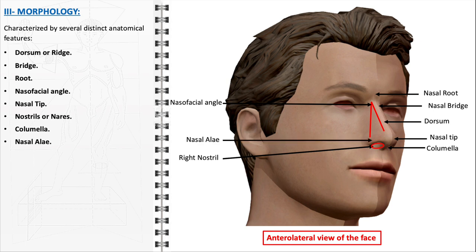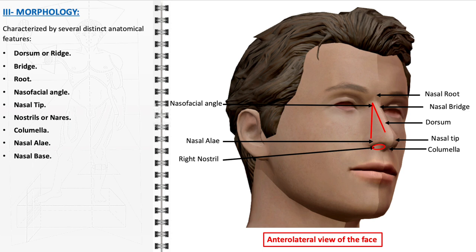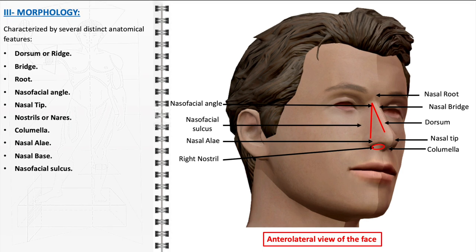The nasal alae are the outer sides of the nostrils, made up of cartilage and soft tissue, forming the lateral boundaries of the nostrils and contributing to the width and overall shape of the nose. The nasal base is the bottom part of the nose where the nostrils and columella meet, with its shape and width contributing to the overall proportion and balance. The nasofacial sulcus is the groove or angle where the alae of the nose meet the cheeks, defining the lateral limit of the nose. Each of these anatomical features plays a vital role in the morphology of the nose, contributing to its functionality in respiration and olfaction as well as its aesthetic appearance.